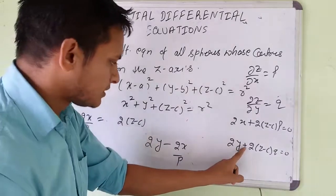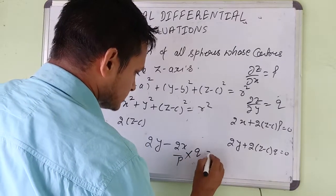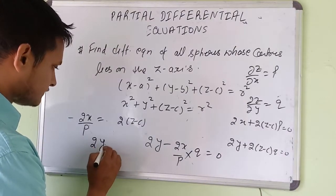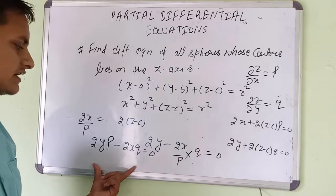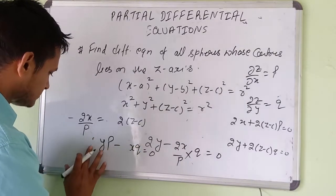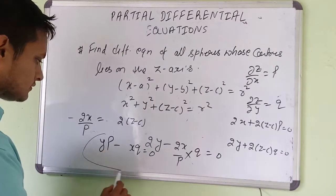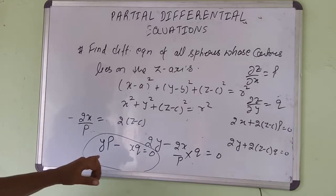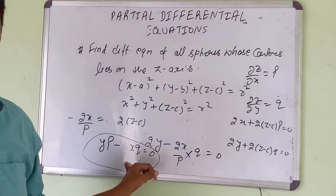So we have 2y + (-2xq/p) = 0. Multiplying through by p: 2yp - 2xq = 0. Taking 2 as common factor and dividing, we get yp - xq = 0. This is our required differential equation of all spheres whose centers lie on the z-axis.